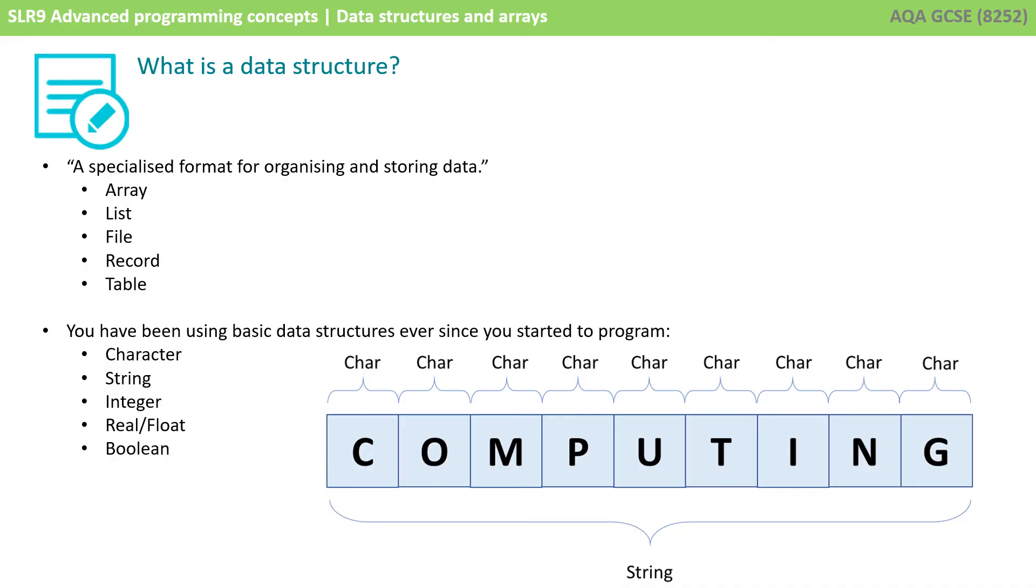You already know that a string is a collection of alphanumeric characters, whereas a char or character data type is a single character. Although you use the string data type, behind the scenes it's actually a data structure made up of a series of separate character data types.